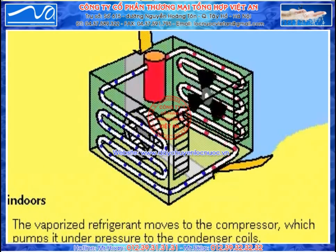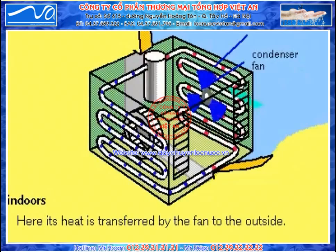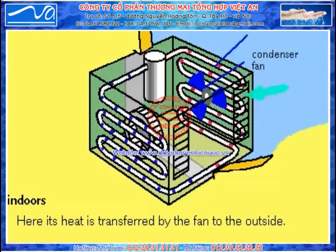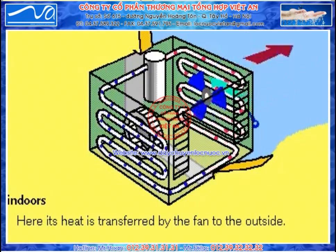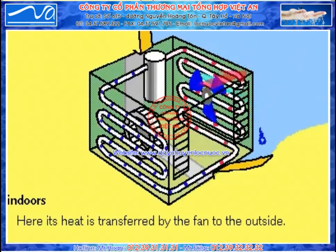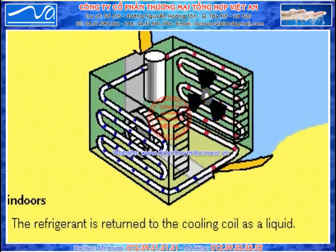To return to a liquid state, the refrigerant must give up its heat. The heat transfer is accomplished by having outdoor air blown through the condenser coils containing the compressed gas, thus cooling the gas and transforming it back to a liquid, which is then returned to the cooling coils.